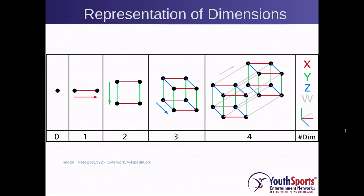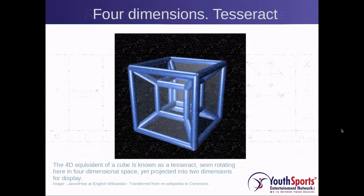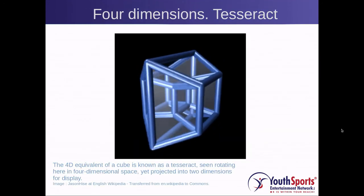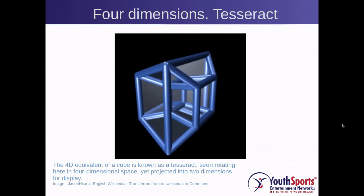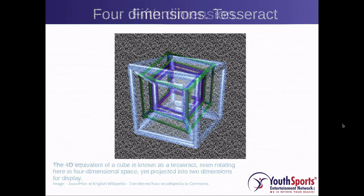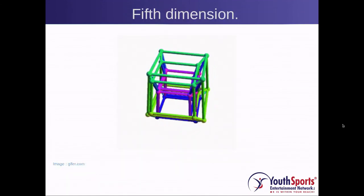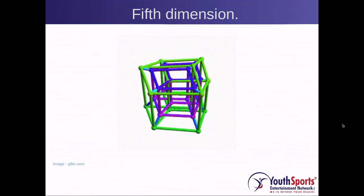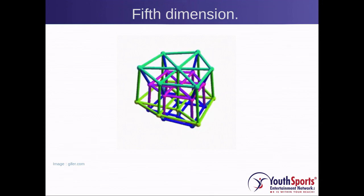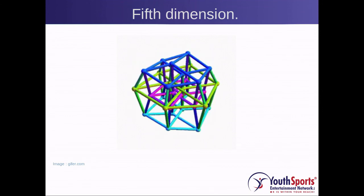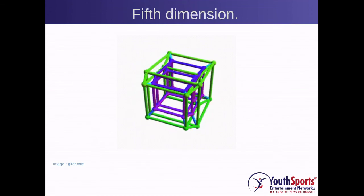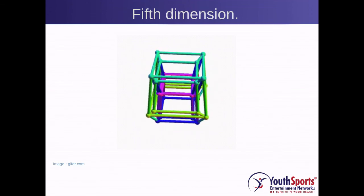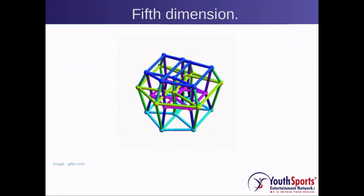Now we will show what a four-dimensional and a five-dimensional object looks like when mapped onto a two-dimensional screen. The four-dimensional object is also called a tesseract. This is a representation of a fifth-dimensional object.